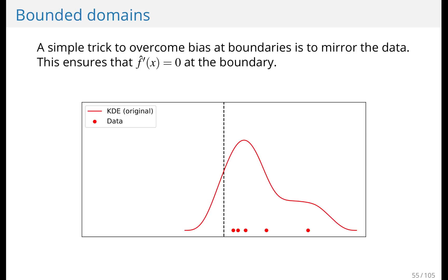And it's a bit unfortunate, because it places density to the left of the boundary. So think of this being age, and you just said that there's a probability for people being less than zero of age, which doesn't really make a lot of sense. And there are many ways to deal with this, but I want to introduce a simple way to deal with it. And it's called mirroring the data.